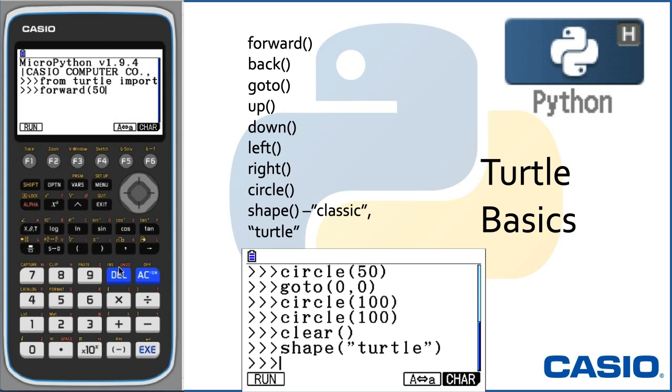Here are the commands. Forward, back, go to, pen up which is up, pen down which is down, left, right, circle, and then shape. You have classic shape or the classic turtle shape for your arrow.